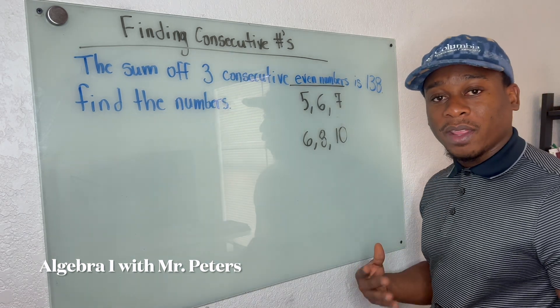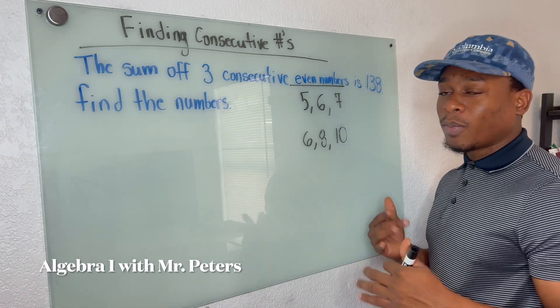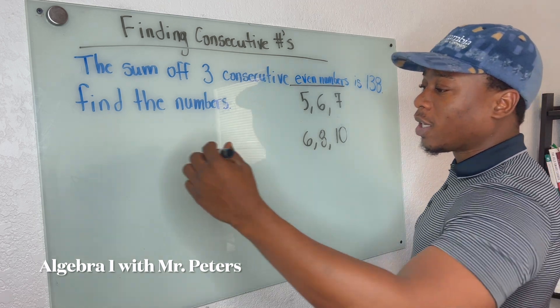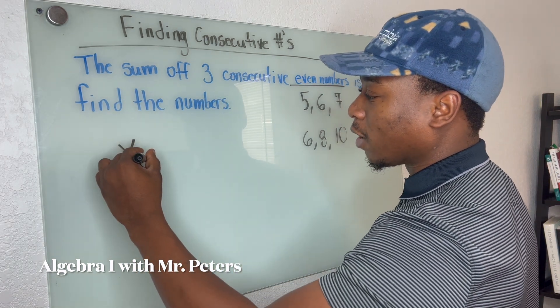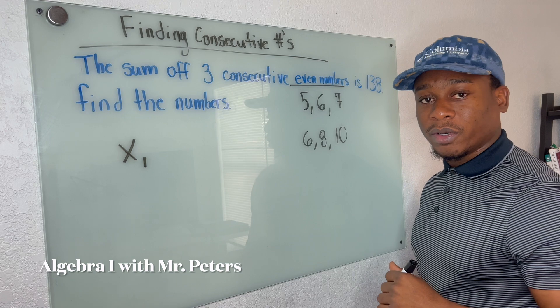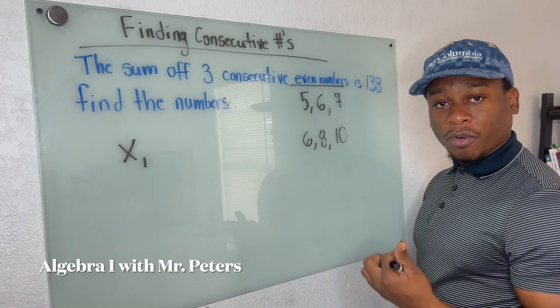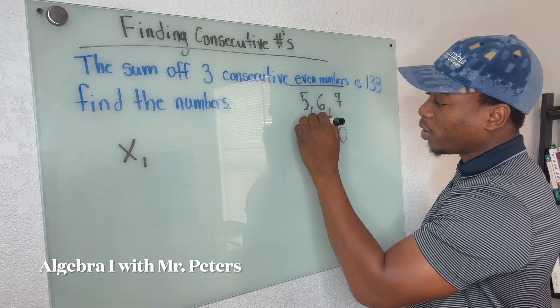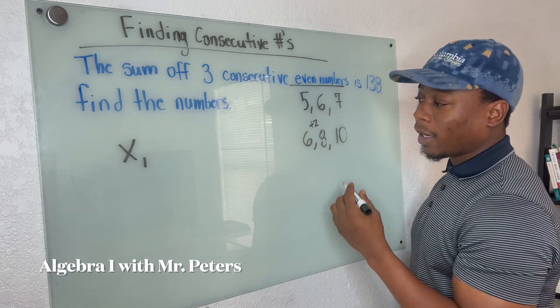Now, in this problem, the way that we're going to solve, we're going to think about the first term and understand that the first term is just going to be x. That's the first number. And if we look, to get from one even number to the next, we're always going to have to add at least two.